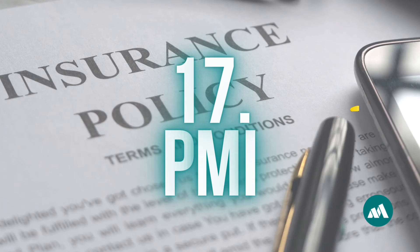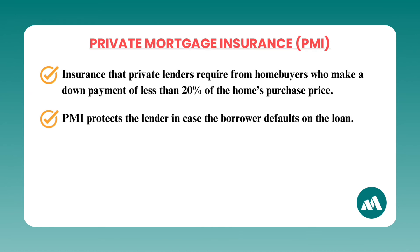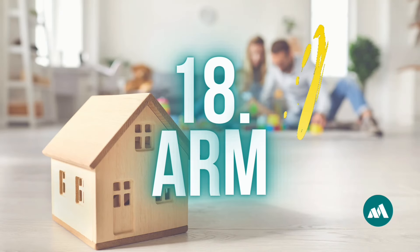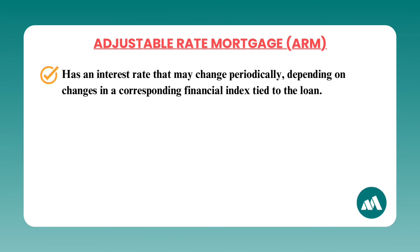Number seventeen: PMI, or private mortgage insurance. PMI is insurance that private lenders require from home buyers who make a down payment of less than 20 percent of the home's purchase price. PMI protects the lender in case the borrower defaults on the loan. Although PMI benefits the lender — not the borrower — it allows buyers to purchase homes with a smaller down payment, making homeownership more accessible. This type of mortgage insurance is found on conventional or private loans.